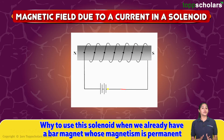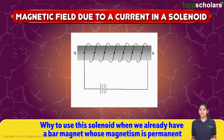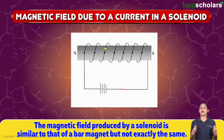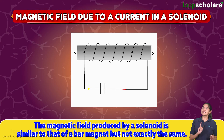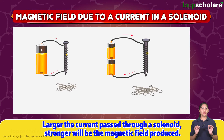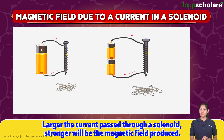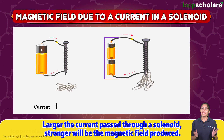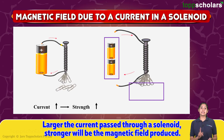This brings us to the question of why to use this solenoid when we already have a bar magnet whose magnetism is permanent. The magnetic field produced by a solenoid is similar to that of a bar magnet but not exactly the same. Using solenoids has advantages: it is temporary, meaning we can change the magnetic strength — firstly by changing the strength of the current in the solenoid, and second by changing the number of turns in the solenoid.